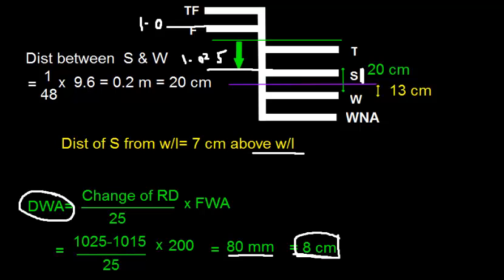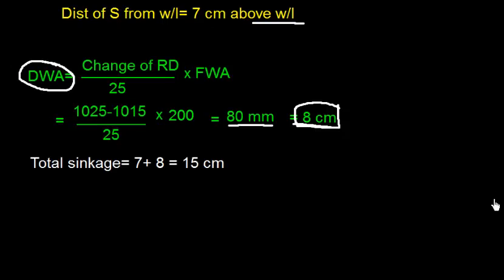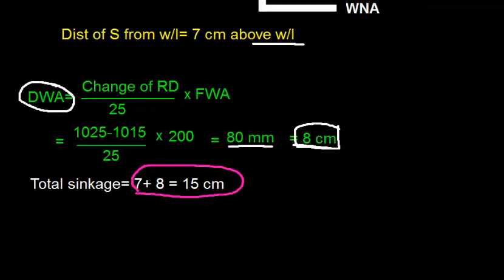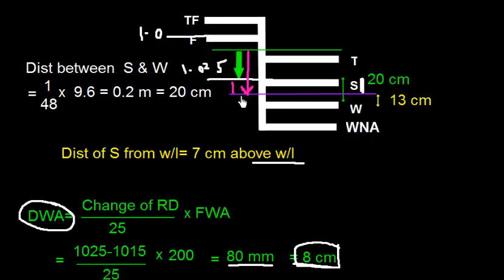We need to find the total sinkage. The total sinkage is the distance from present dock water to this line. We can find the mean sinkage: total sinkage is 7 plus 8 equals 15 cm. This one is 7 cm and this one is 8 cm dock water allowance, so total is 15 cm.